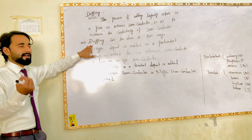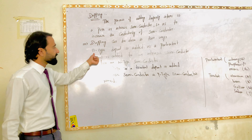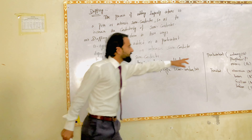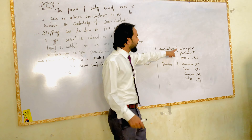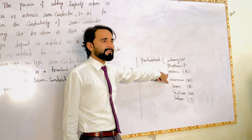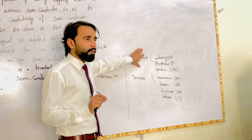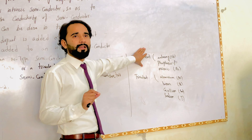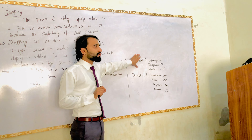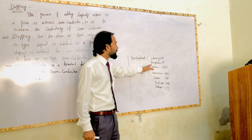Among the pentavalent elements, we have antimony and phosphorous. Pentavalent is a property where the element has 5 electrons in the outermost shell. This is the last shell — the outermost shell has 5 electrons.